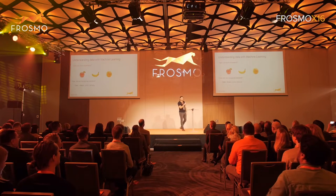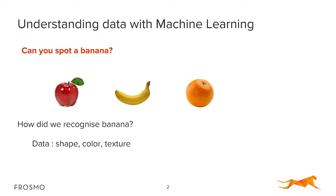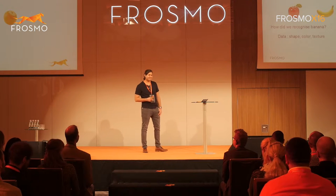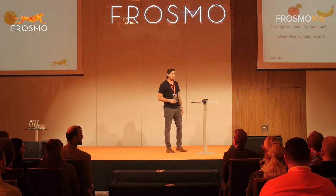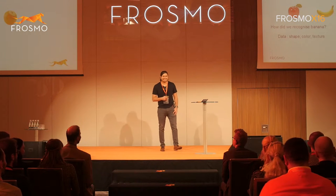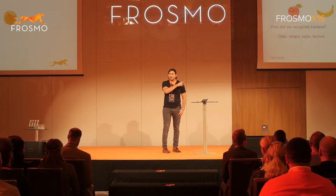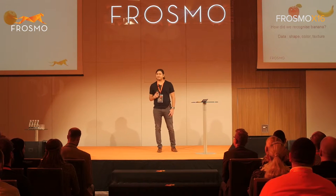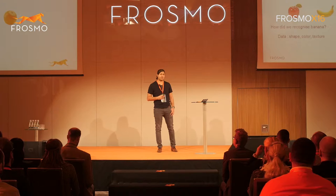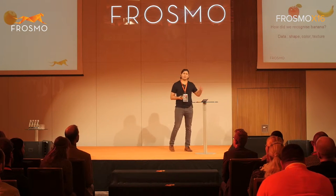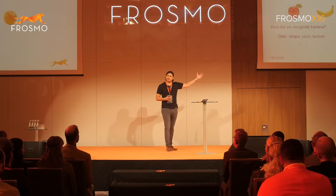So in this slide, could you please spot the banana for me? Anyone? In this slide. Exactly — chocolate for him, or give this man a cookie! So exactly, it's in the middle and it was very easy for us to recognize the banana. How did we do this? How did we recognize a banana? How could we identify, between all those fruits, that it was a banana?